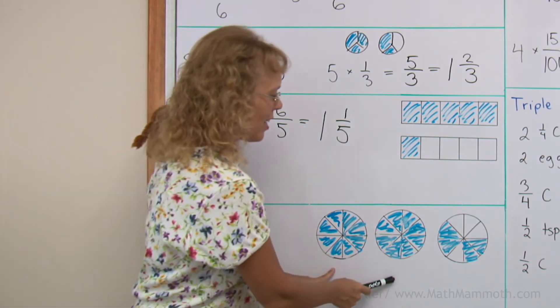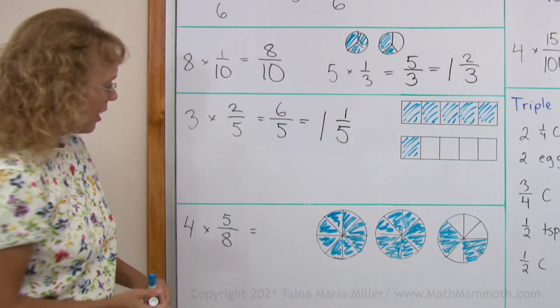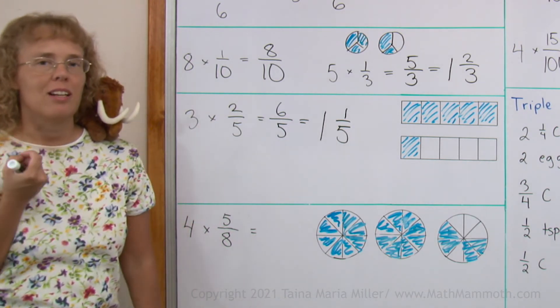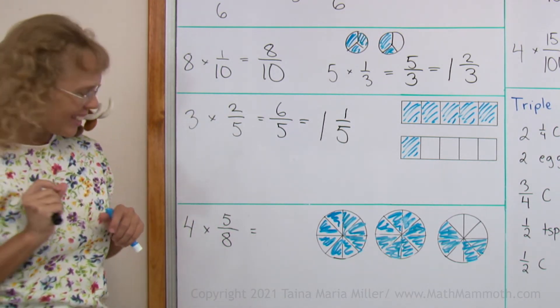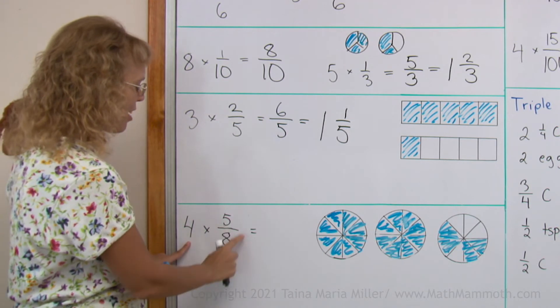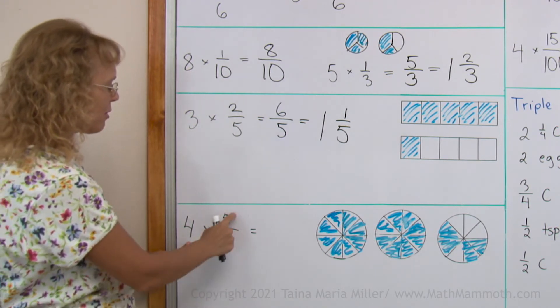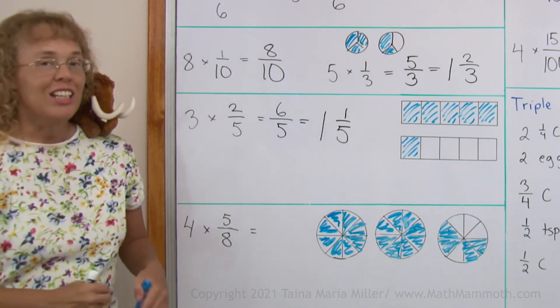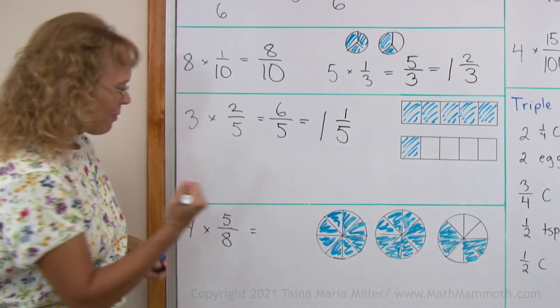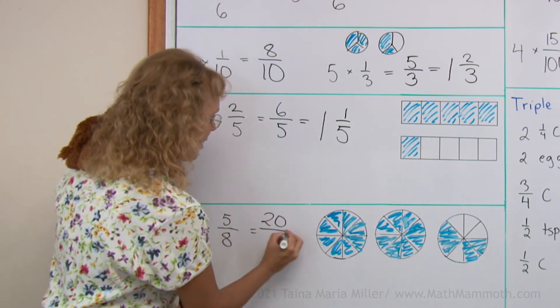And we get 2 whole pies and 4 eighths, right? But surely you have, by now, figured out a little shortcut for this, which is that 4 copies of 5 eighths, we can multiply 4 times 5, 20, to get the total number of eighths. We get 20 eighths.